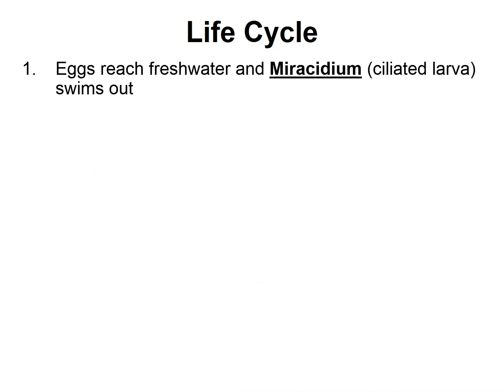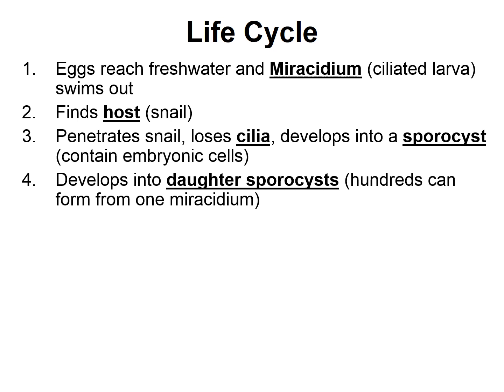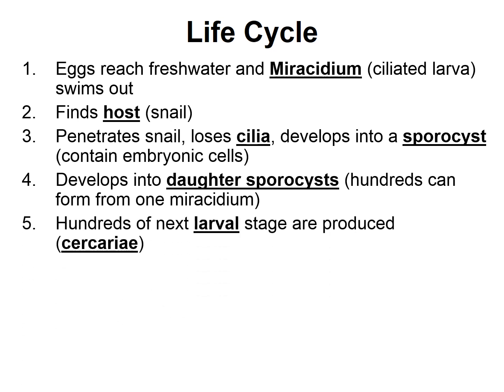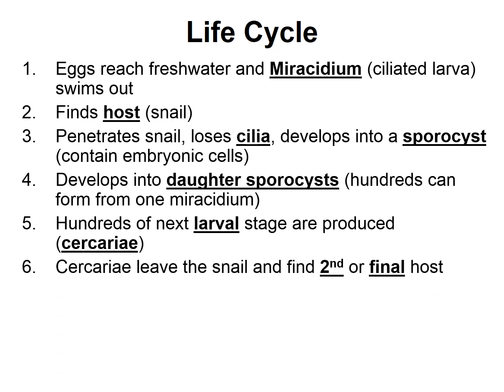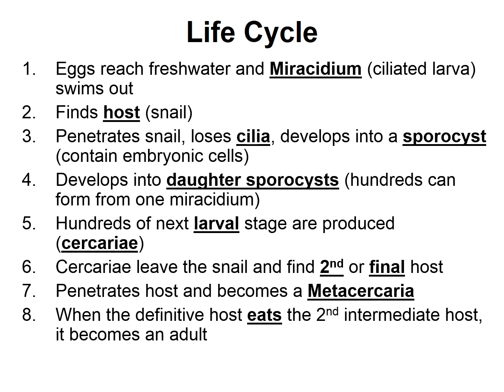Here's the life cycle. First, eggs are shed typically in the feces. They reach freshwater, and the ciliated larvae — miracidia — swim out and find a host, usually a snail. They penetrate the snail, lose their cilia, and develop into a sporocyst, which has embryonic cells inside. These develop into daughter sporocysts, and then hundreds of the next larval stage — cercariae — are produced. The cercariae leave the snail, find another host, penetrate it, and become metacercariae. When the definitive host eats the second intermediate host, it can grow into the adult parasitic worm.